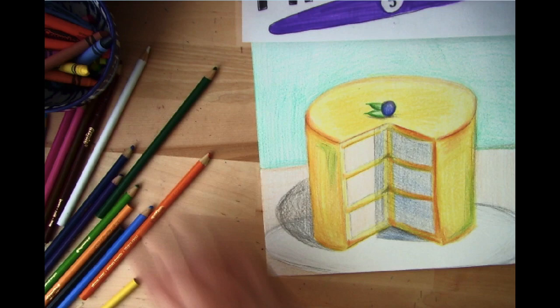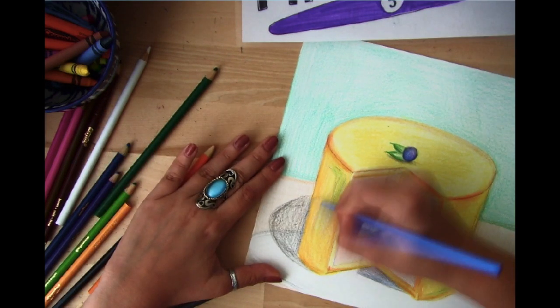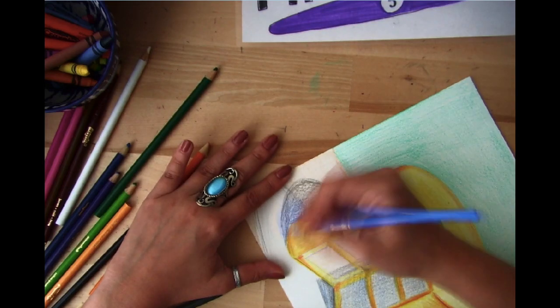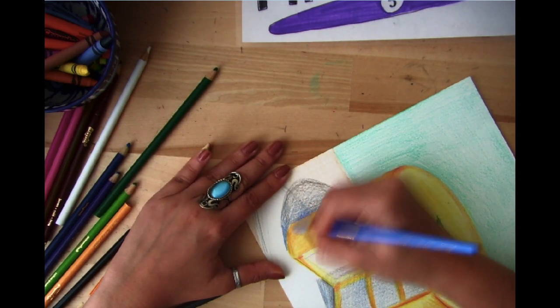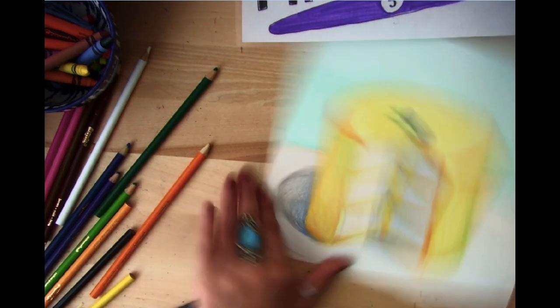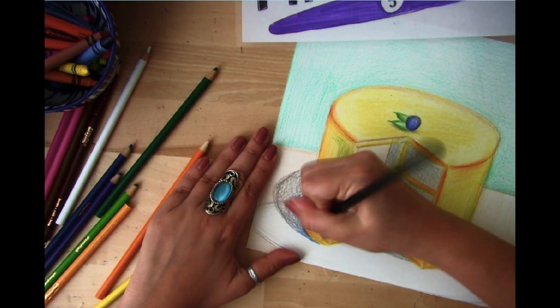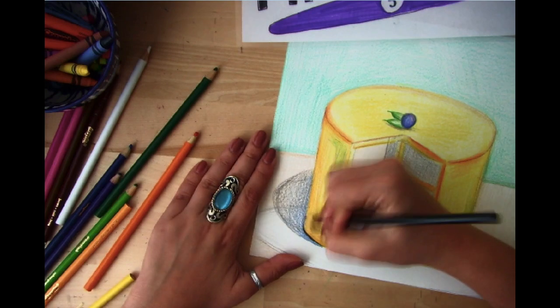We're going to do the same thing and add some blue closest to my cake. That would be the darkest part. Fading out and then closest to the bottom. And lastly, with our black coming in closest to the cake again and dragging it out just a tiny bit.